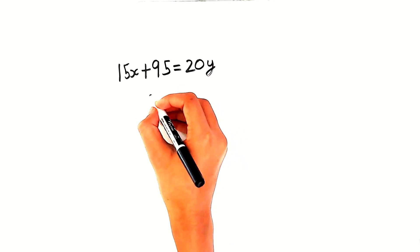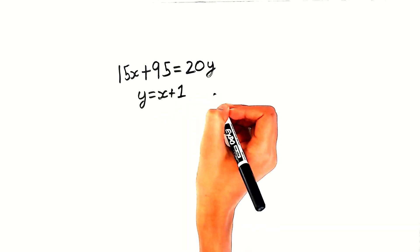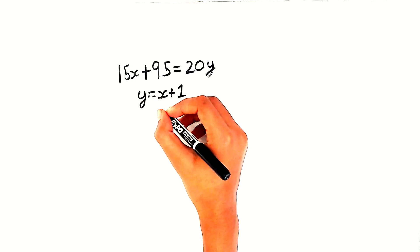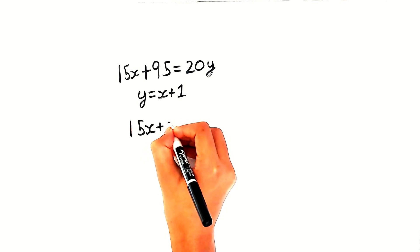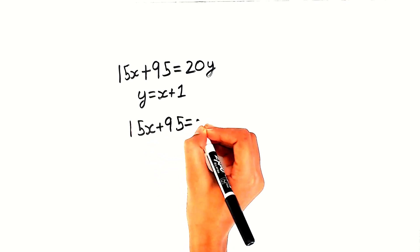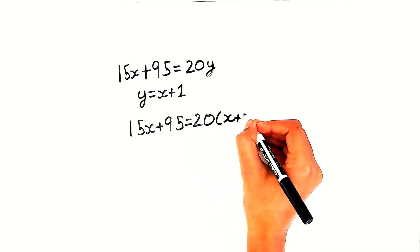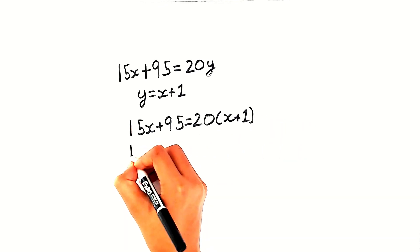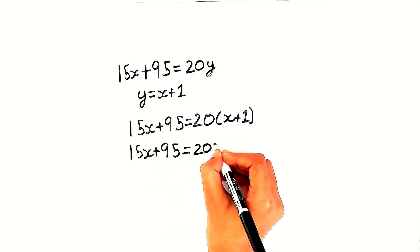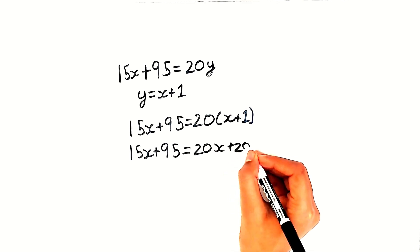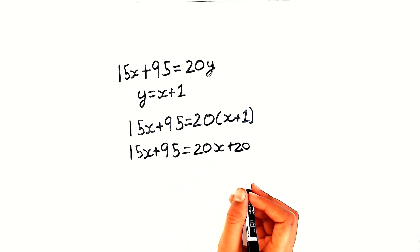So here y actually equals x plus 1 because it's one day later. So let's substitute y. So it'll be 15x plus 95, which equals 20 times (x plus 1). Now it'll be 15x plus 95, which equals 20x plus 20. Now let's move the plus 20 over here, so it'll be minus 20. Let's move the 15x over here, so it'll be minus 15x.